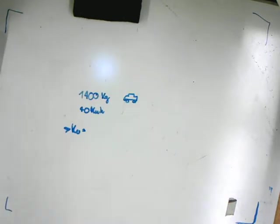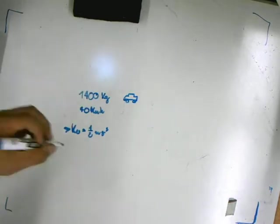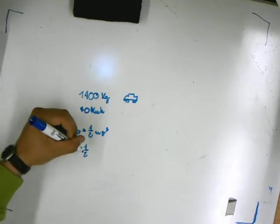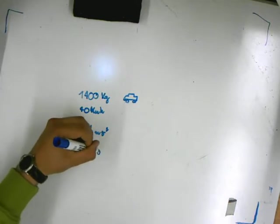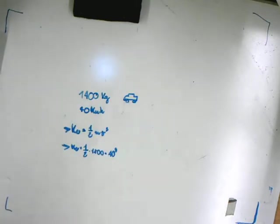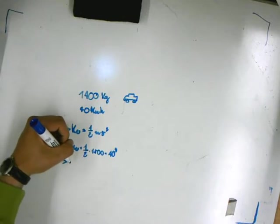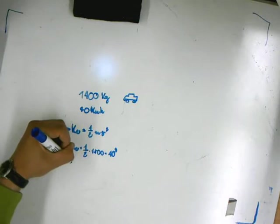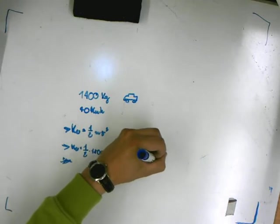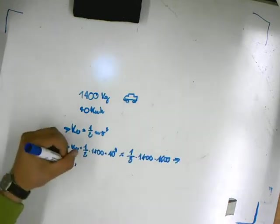Kinetic energy is equal to one-half of mass times speed squared. So the kinetic energy in this problem will be one-half of 1400 times 40 squared, so the kinetic energy is...